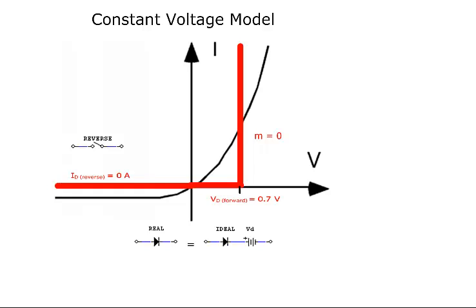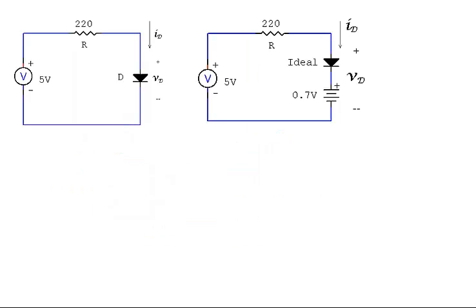The constant voltage model provides a more accurate analysis. This model includes a voltage drop of 0.6 volts across the forward bias diode. Analysis begins with substituting the circuit's diode with the constant voltage model. It is an ideal diode in series with an opposing voltage of 0.7 volts.